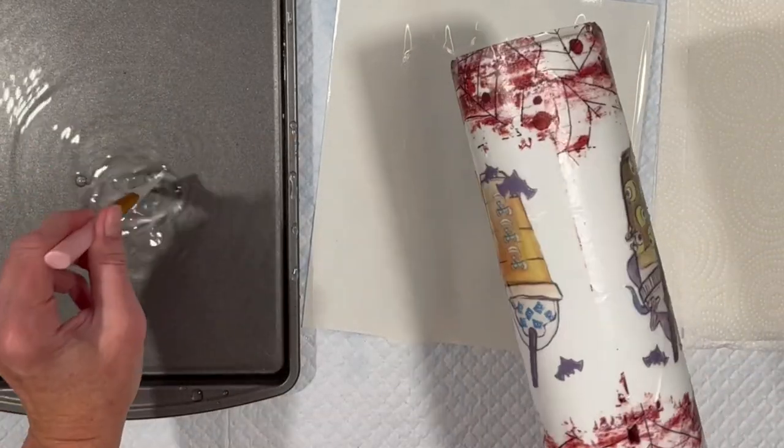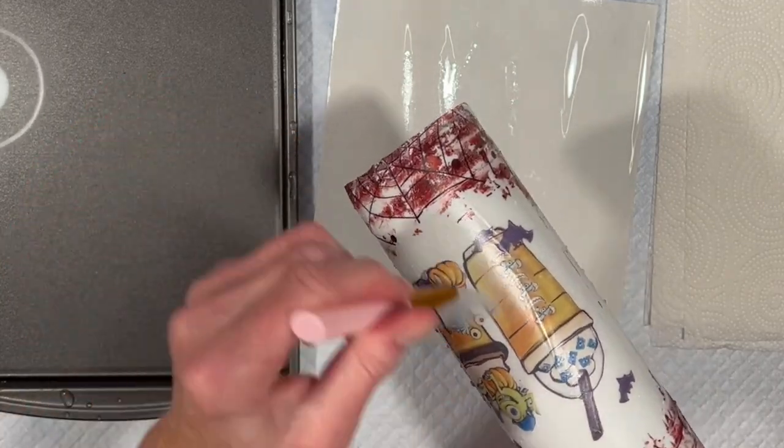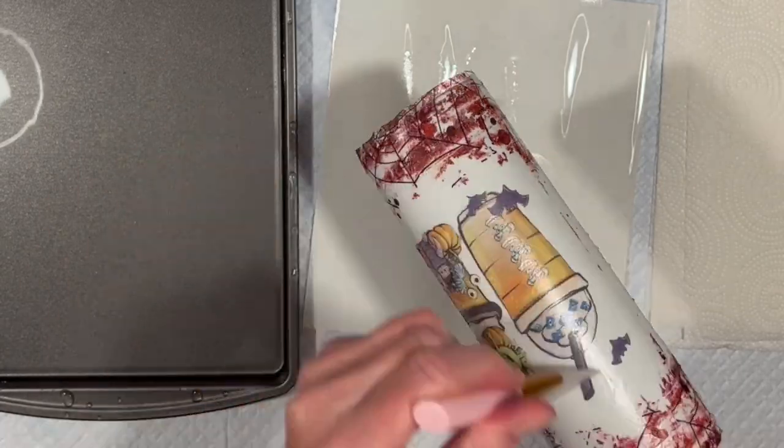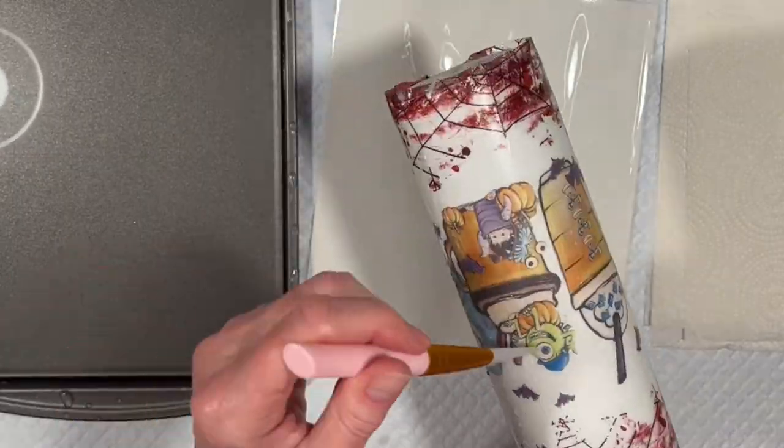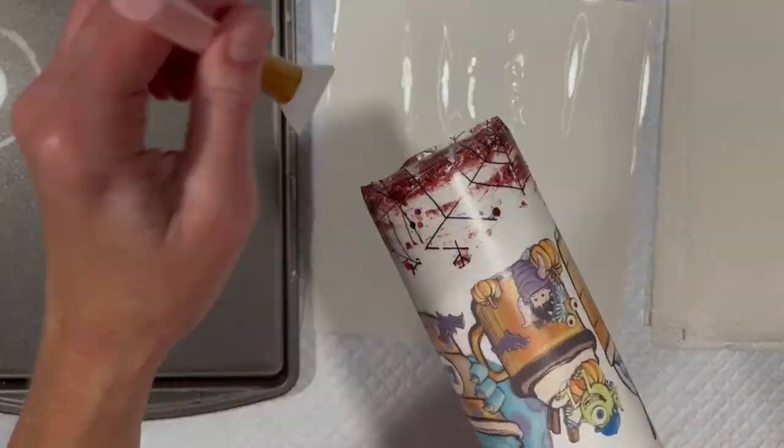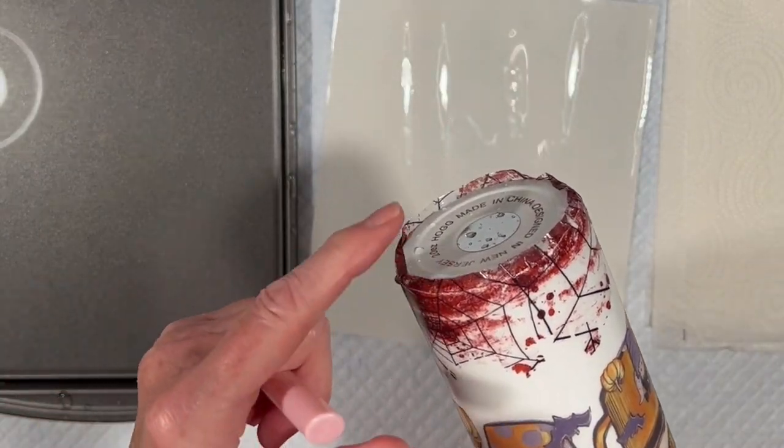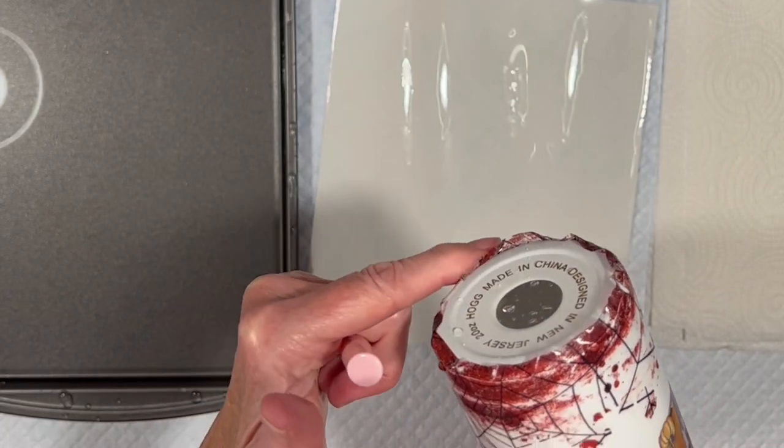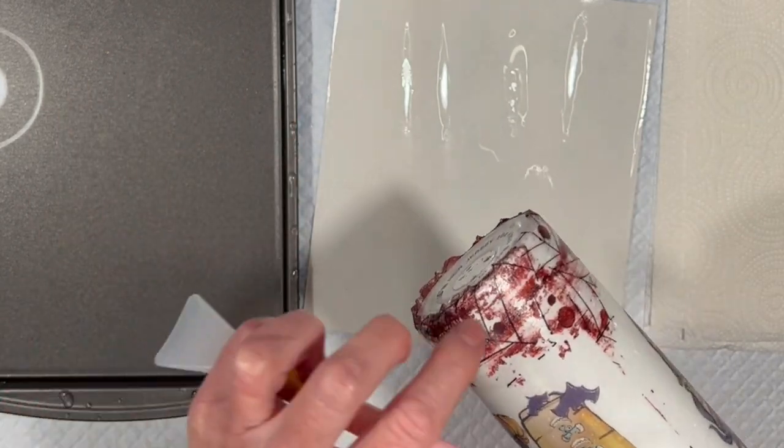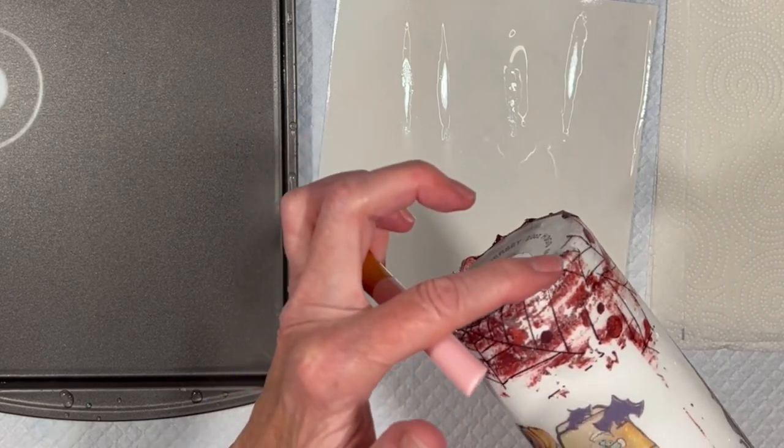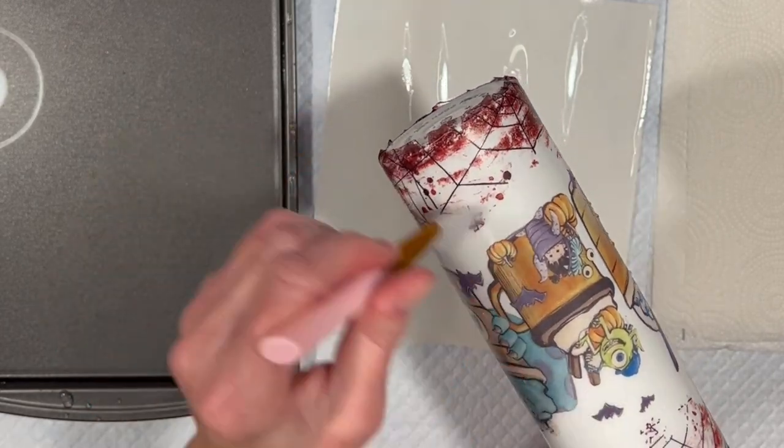Dip your squeegee in the water so it doesn't drag, and then start working out all the bubbles and the water and wrinkles and whatnot. All right, this looks pretty good. I'm going to bend this under for now and deal with trying to trim it off when it's dry tomorrow. That will mean it will have gone basically like this one did without too much drama.